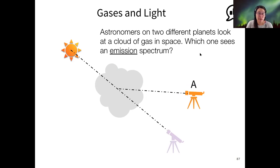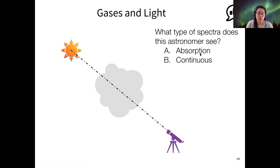So a related question is, what type of spectrum does this astronomer see? I see the most votes for A, the absorption spectrum. And that's exactly right. So if the cloud was not there and they were just looking directly at the star, then they would see a continuous spectrum. But because the cloud is there, some of the light will be absorbed by the molecules and atoms in the cloud at characteristic wavelengths, depending on their composition. And so this astronomer will see an absorption spectrum as a result.